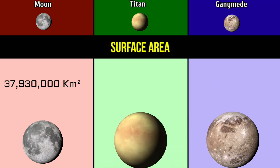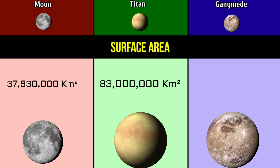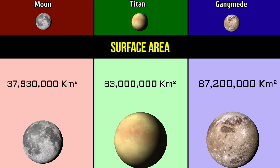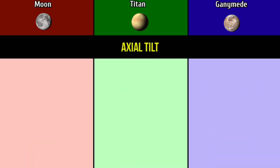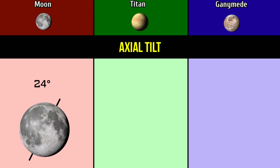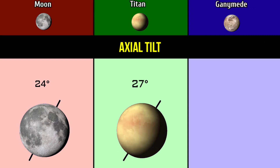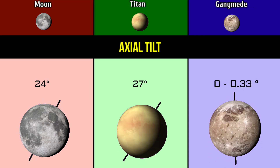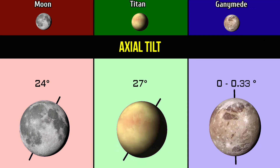Surface area: 37.9 million square kilometers for the Moon; 83 million square kilometers for Titan; 87.2 million square kilometers for Ganymede. Axial tilt: 24 degrees for the Moon; 27 degrees for Titan; 0 to 0.33 degrees for Ganymede.